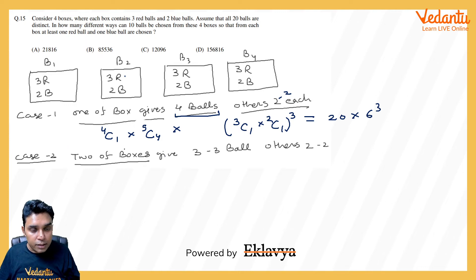And here the case 2: when 2 boxes are giving 3 balls each and others are giving 2 balls each. Now let us see how this will be done. 2 boxes, which 2 boxes? So I think 4C2 and 3 balls.